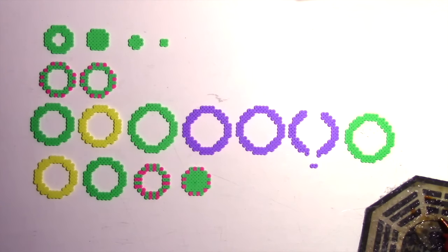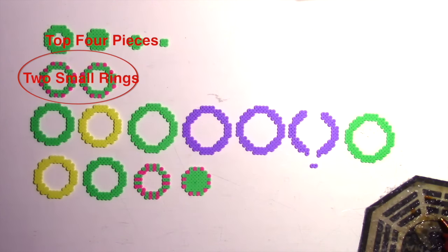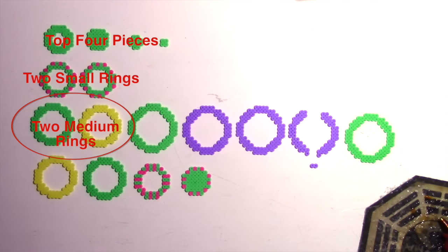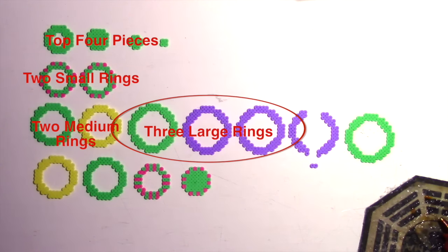Now here we've got all the pieces we'll need for an egg. This can be a little tricky to explain, so I'm going to break down the pieces into categories, going from the top of the egg to the bottom. These are the top four pieces. Then we'll have two small rings, then two medium rings. Next is three large rings. These are the widest part of the egg.